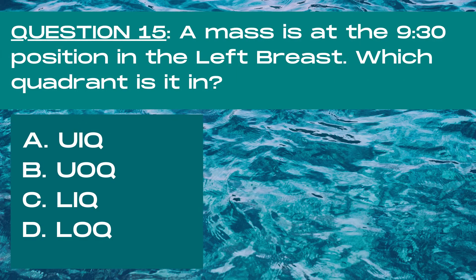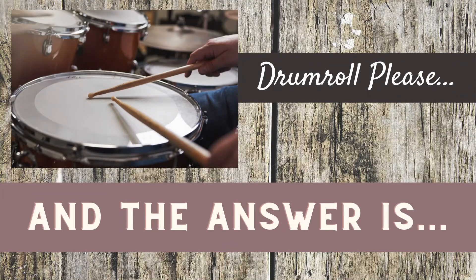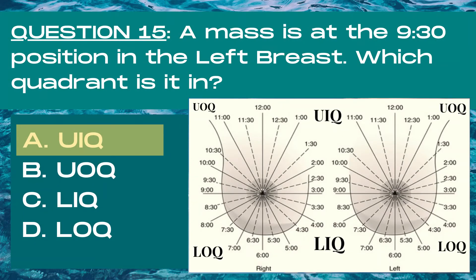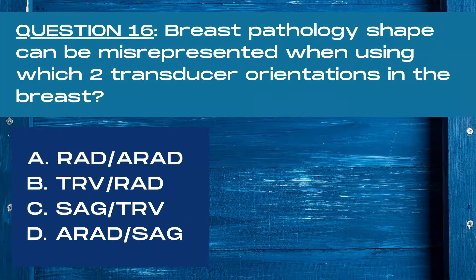Question 15. A mass is at the 9:30 position in the left breast. Which quadrant is it in? A upper inner quadrant, B upper outer quadrant, C lower inner quadrant, or D lower outer quadrant? The answer is A, upper inner quadrant. In the left breast, the upper inner quadrant has clock positions between 9 o'clock and 12 o'clock, and it's the superior medial section of the breast. The 9:30 position is within this segment.